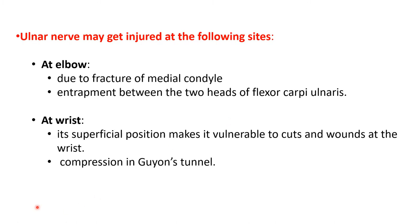The second site of injury is at the wrist, because the nerve becomes very superficial in the lower part of the forearm and is vulnerable to cuts and wounds. In the upper forearm it is covered by flexor carpi ulnaris. It may also get compressed at the Guyon's tunnel, which is present between the pisiform and the hook of hamate — a fibrous band stretching between these two bones creates the tunnel known as Guyon's tunnel.